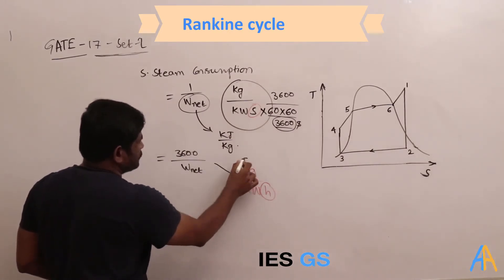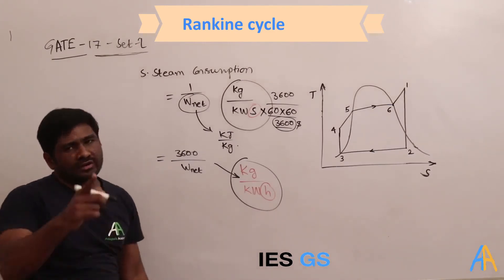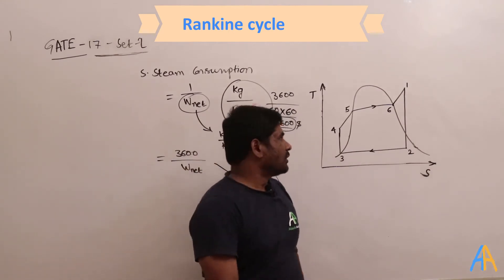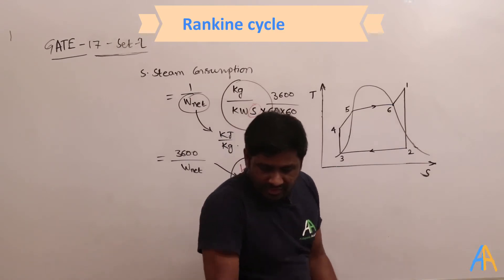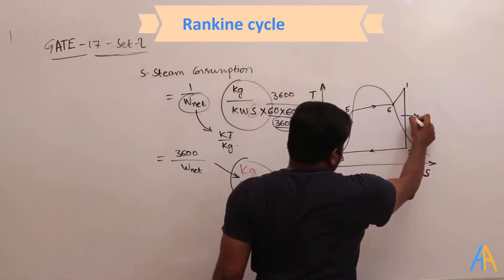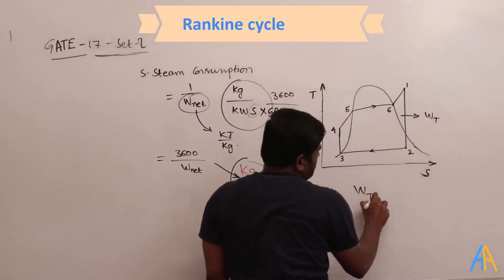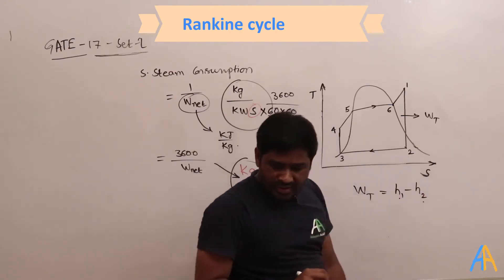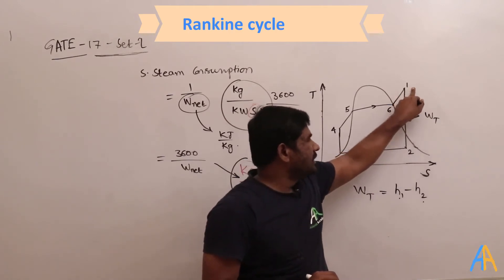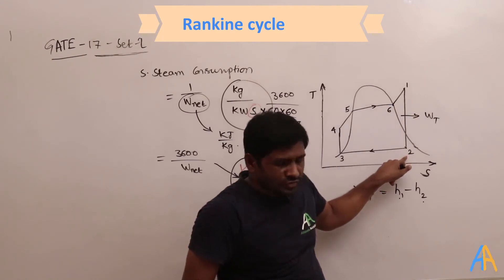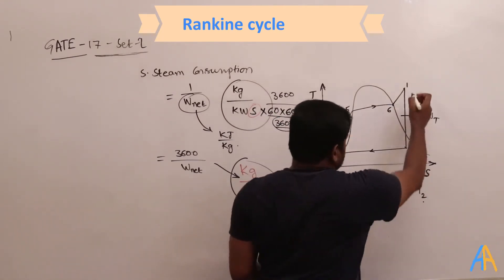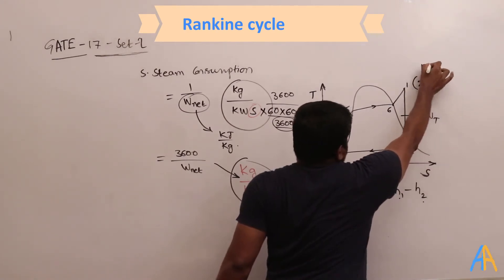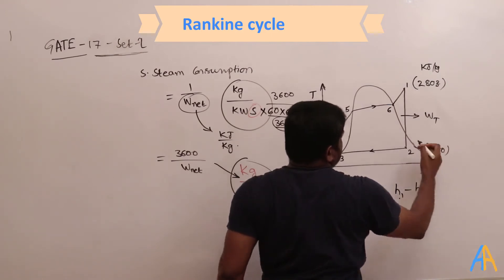The only thing we need to find is W_net. The turbine work W_T = h1 − h2. We need h1 (turbine entry) and h2 (turbine exit). h1 = 2803 kJ/kg and h2 = 1800 kJ/kg.